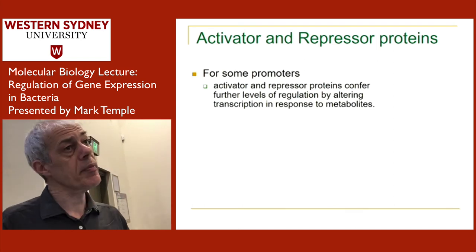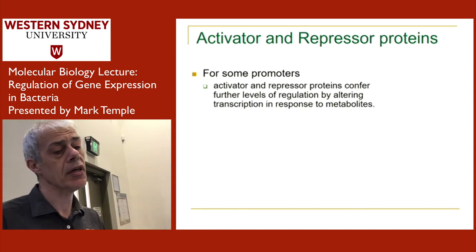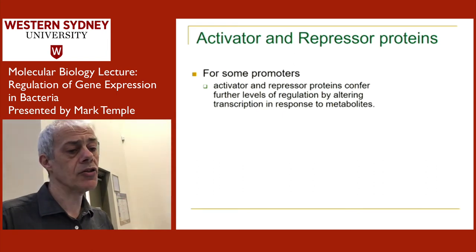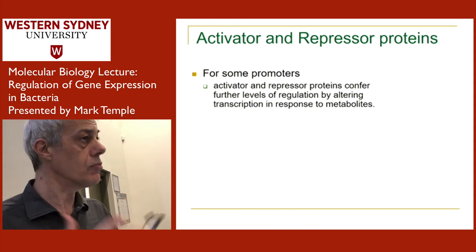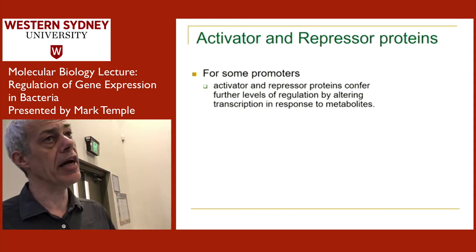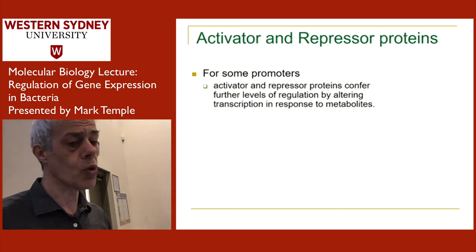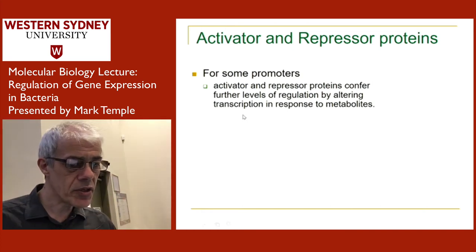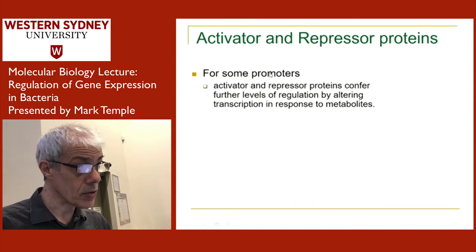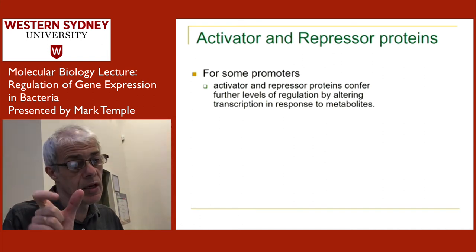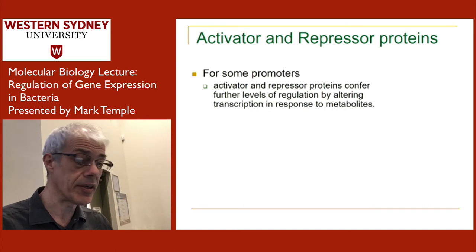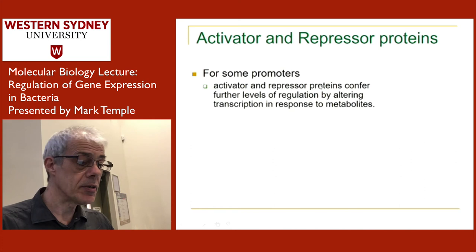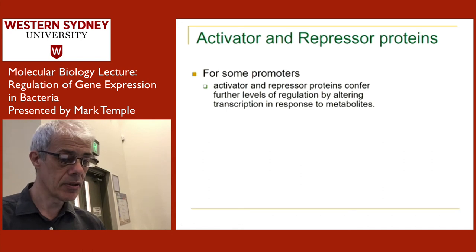There are other proteins that come into play which are really important — generically we call these transcription factors. Two classes are transcription activators and transcriptional repressors. These proteins bind to DNA, and within the promoter sequence of the gene there are motifs — small predictable sequences — which bind these activators and repressors, in the same way that the promoter binds the polymerase.